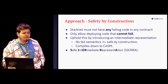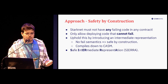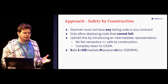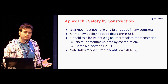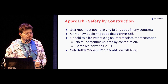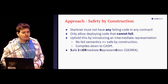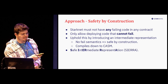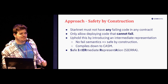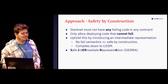So what we actually want to do is somehow enforce on StarkNet that there won't be any failing code in any contract deployed anywhere. We want to only allow developers to deploy code that cannot fail. How can we make sure their code has no failure flows? We uphold this by introducing this intermediate representation, which we call Sierra — safe intermediate representation.